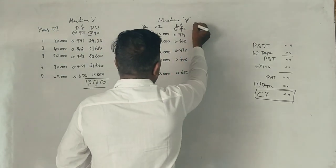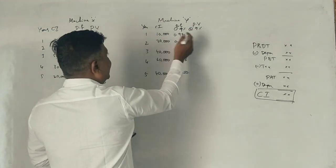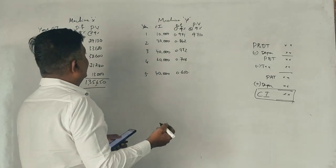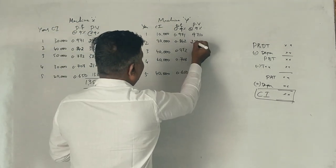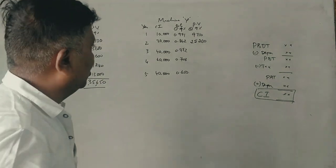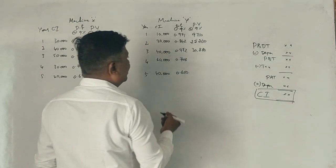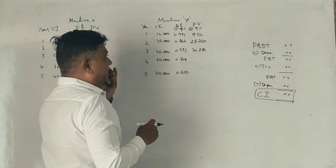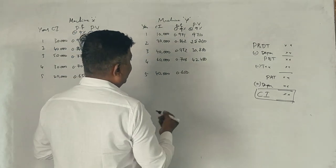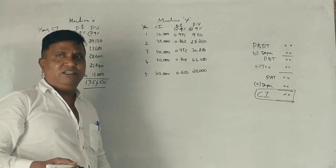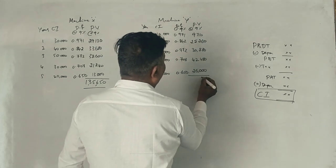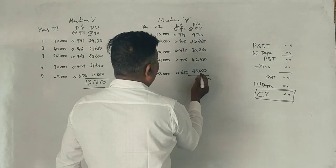Now let us see the present value at 9%. 9,710. 30,000 into 0.842 is 25,260. 40,000 into 0.772 is 30,880. 60,000 into 0.708 is 42,480. 26,000. Now check the totals. Total is 134,330.